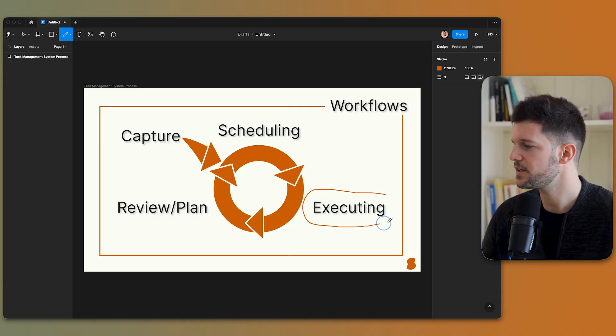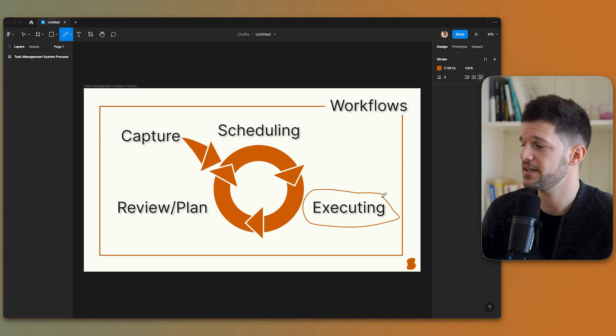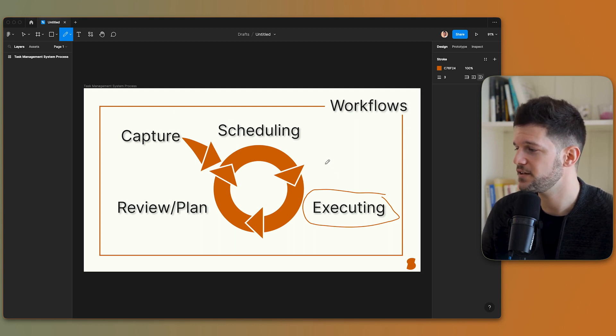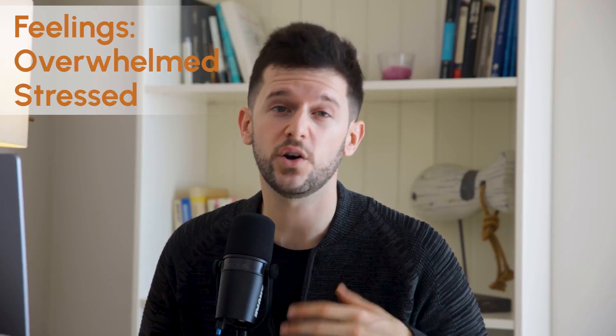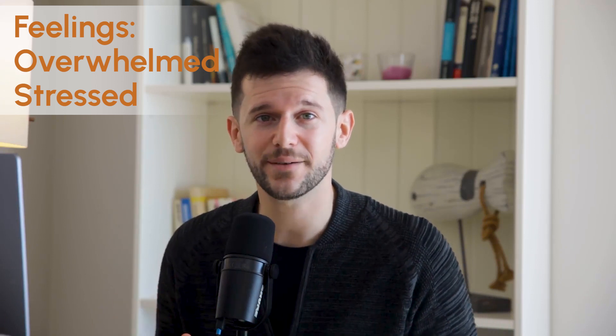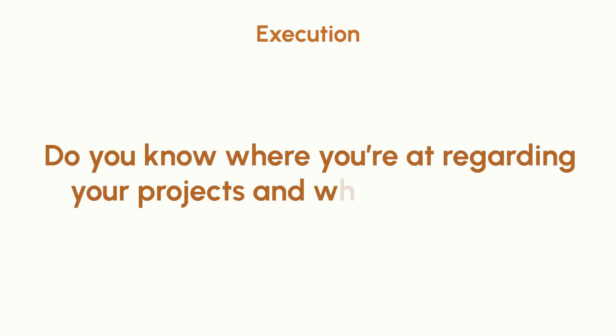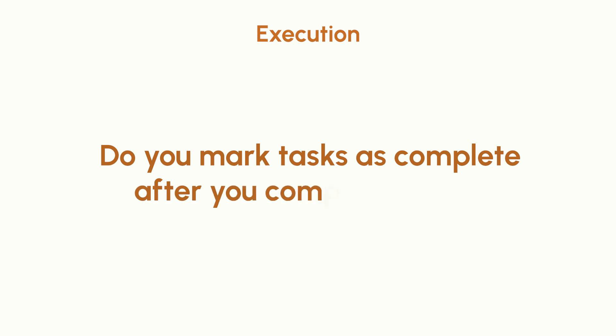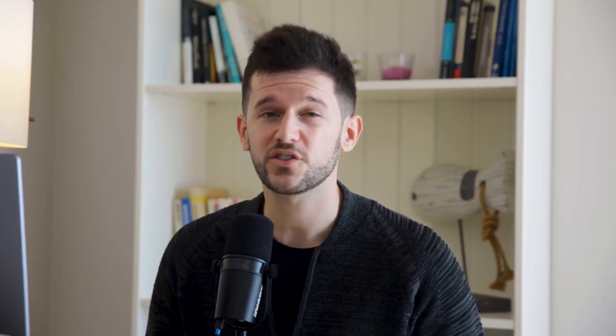The next part of the system is executing — basically doing what we have captured and then scheduled. If this part isn't working, we will feel overwhelmed and stressed because we'll always have the feeling that things need to get done but we can't really handle them. Here are the questions: Do you know where you're at regarding your projects and what's left to do? Being able to see the next steps for each project will reduce overwhelm and give you the feeling that things are under control, even if not everything is done yet.